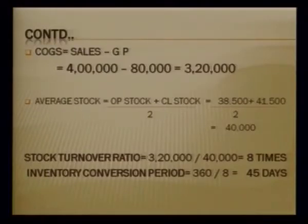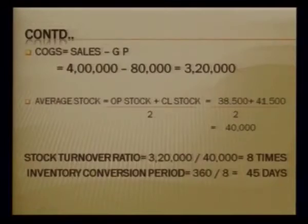This means the businessman purchases and sells goods eight times during the year. Apart from this, we can compute the stock conversion period — that is, how many days, weeks, or months it takes to convert stock into cash. The formula is: 365 days (or 52 weeks or 12 months) divided by the stock turnover ratio.